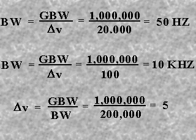The open-loop bandwidth is equal to the GBW, 1,000,000, divided by the gain, 20,000, or 50 Hz. If negative feedback imposes a gain of 100 on the circuit, the bandwidth will be the GBW, 1,000,000, divided by the gain, now 100, or 10 kHz.